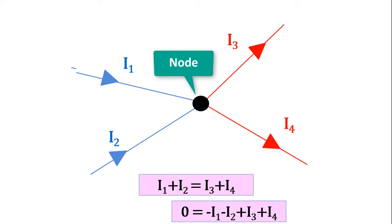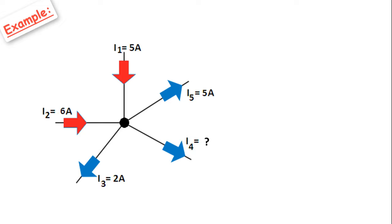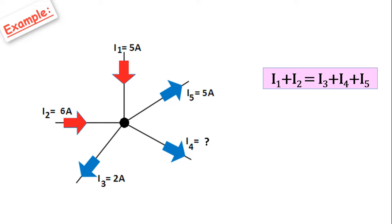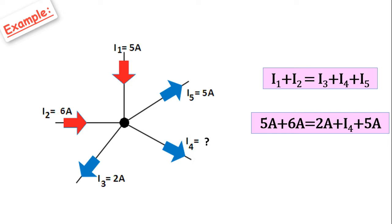What is the unknown current I4 value in this example? Let's try to find it. The currents I1 and I2 come to the nodal point, and the currents I3, I4, and I5 go from this point. Then I1 plus I2 equals I3 plus I4 plus I5. Substituting values: 5 amps plus 6 amps equals 2 amps plus I4 plus 5 amps. From here, the value of I4 is 4 amps.